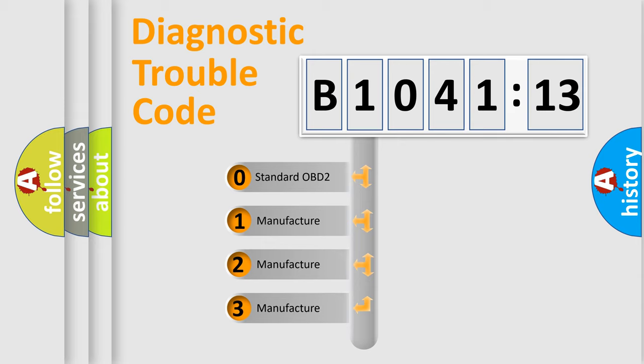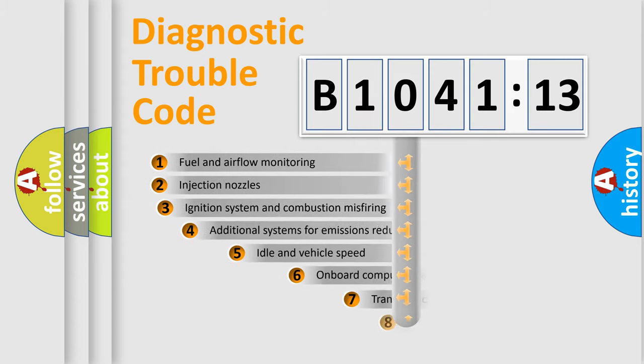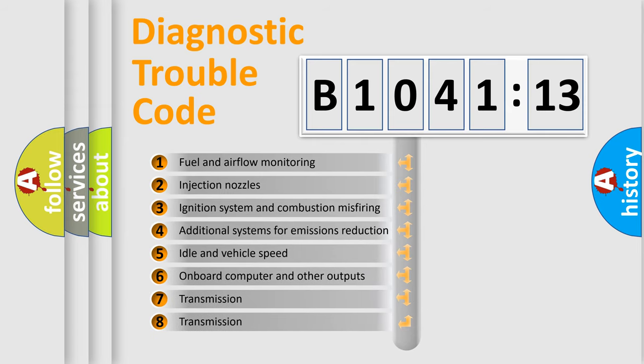If the second character is expressed as zero, it is a standardized error. In the case of numbers 1, 2, 3, it is a manufacturer-specific expression of the car-specific error.